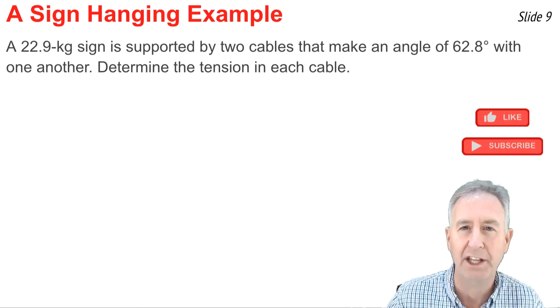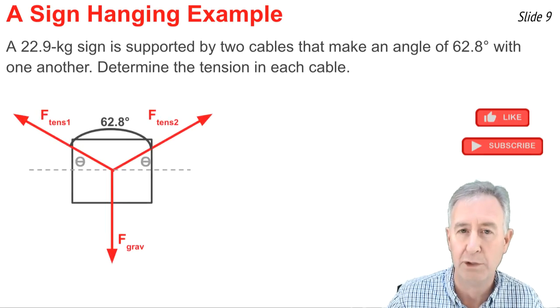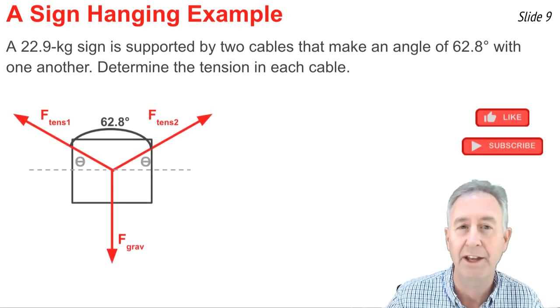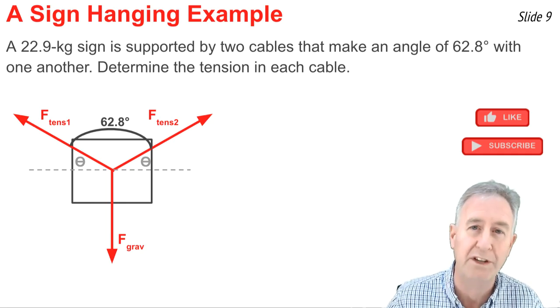And I know the cables make an angle with one another of 62.8 degrees. And I want to calculate the tension in each one of those cables. So here's my force diagram, showing the two tension forces that are angled relative to the horizontal. And then one downward force, the force of gravity.